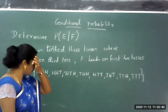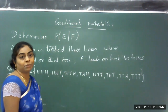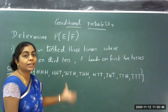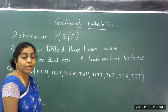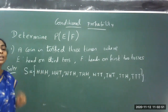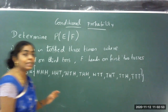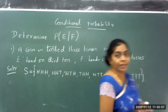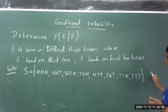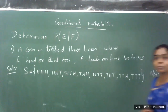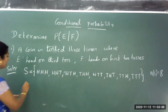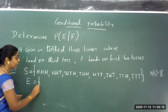When I toss a coin three times, these are the possible cases I can get back. Now I define the two events here: event E and event F. The number of elements in this sample space is 8. There are totally 8 elements.